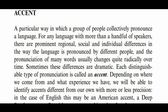The Encyclopedia of Language by Trask gives a long overview on accent. It says that in any language with more than a handful of speakers, there are prominent regional, social, and individual differences in the way the language is pronounced, and the pronunciation of many words usually changes quite radically over time. Each distinguishable type of pronunciation is called an accent. In the case of English, this may be an American accent, Deep South accent, Scottish accent, working-class London accent, French accent, Russian accent, and so on.